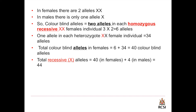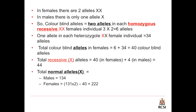Total recessive alleles equal 40 in females and 4 in males — since males only have one X chromosome and there are 4 color blind males — giving a total of 44. The total normal alleles: males have 134 normal alleles since each male has one X chromosome. For females, we multiply the total number of females (131) by 2, because females have two X chromosomes, then subtract the 40 colorblind alleles, giving 222 normal female alleles. The total normal alleles equals 134 in males plus 222 in females, giving 356.